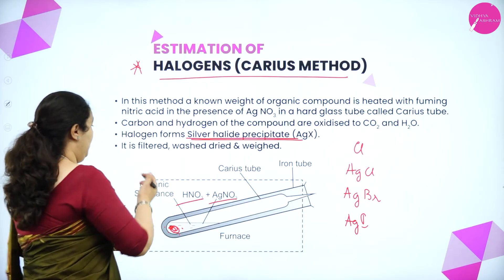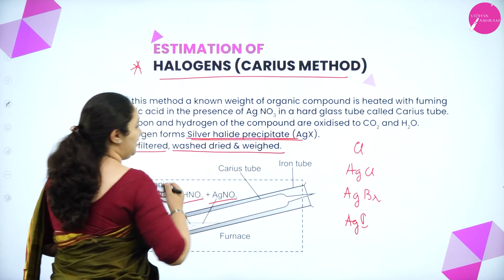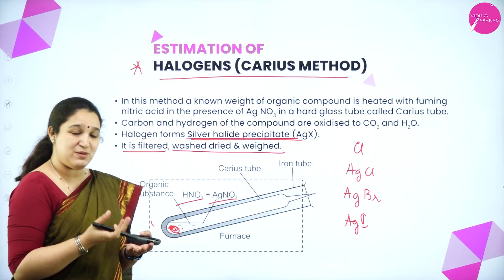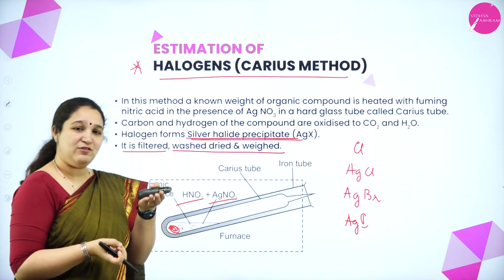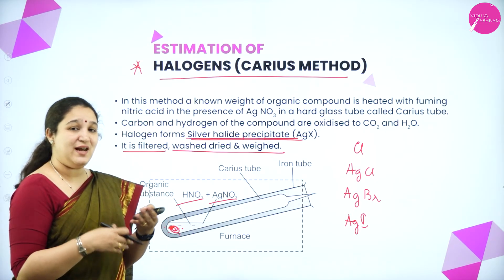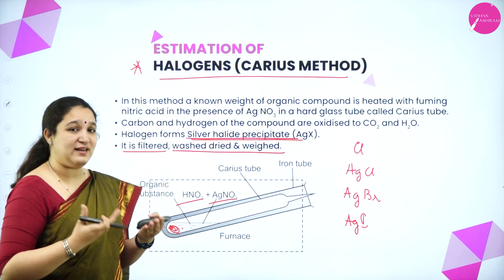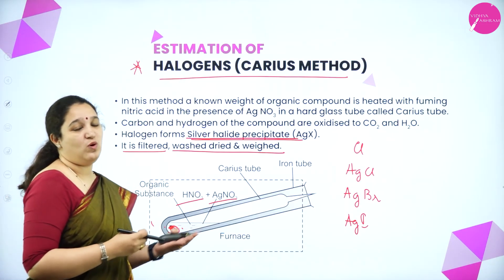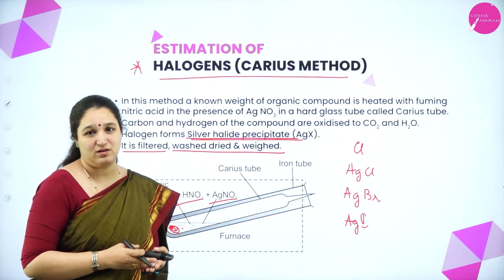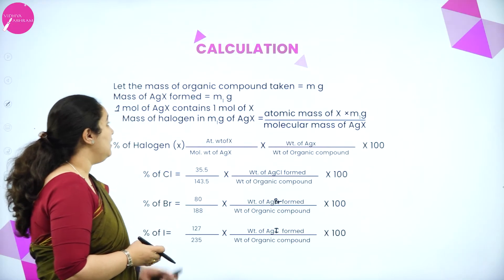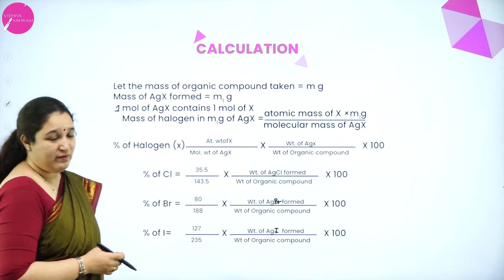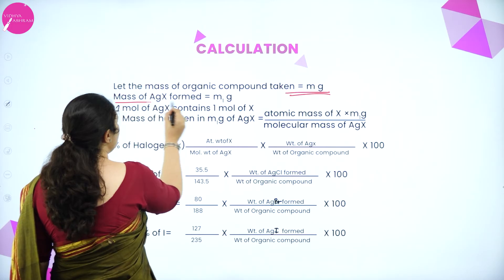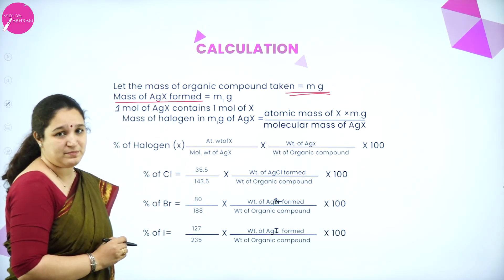The precipitate formed is then filtered, washed, dried, and weighed. You get the weight of AgX formed — since it's a solid precipitate, you can filter, dry, wash, and weigh it to get the mass of AgCl, AgBr, or AgI, depending on which halogen is present. This is Carius method.